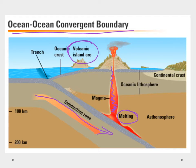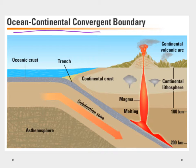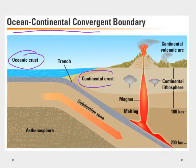So we'll see mountains, but they will be volcanic in nature. We can also have ocean-continental convergent boundaries. Here we see oceanic crust, but this time it's a continental crust that it's going to collide with.